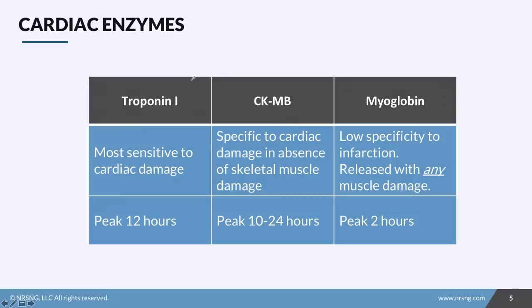Your provider is likely going to order cardiac enzymes: troponin I, CKMB, and myoglobin. These are enzymes we look at to determine cardiac muscle damage. There's also troponin T and CK, but the main one you're going to be looking at is troponin I — it is the most specific to cardiac damage. It peaks within about 12 hours. During the first 12 to 16 hours, you're going to be drawing cardiac enzymes and troponins every couple hours to watch this lab value peak up.